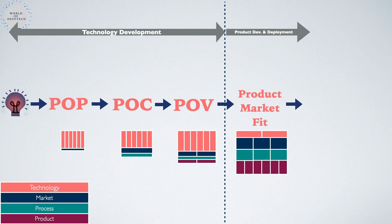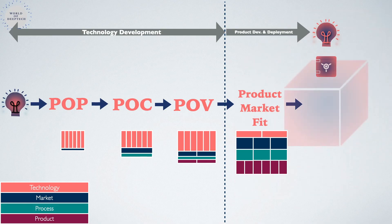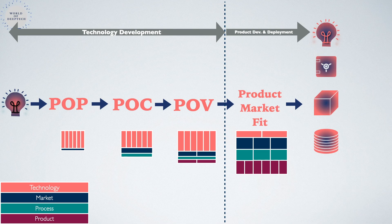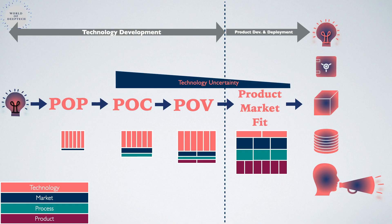The key outcomes of this phase, in addition to the IP assets and the know-how that the team gained through these stages, are a tangible product, initial revenues from early adopters, and customers who are willing to spread the word about the solution and the value the team is offering. The technology uncertainty by the end of this phase is almost eliminated and the market risk is substantially reduced.